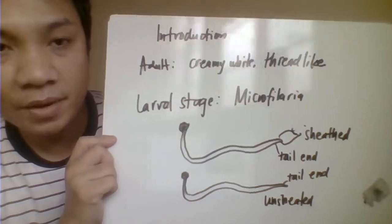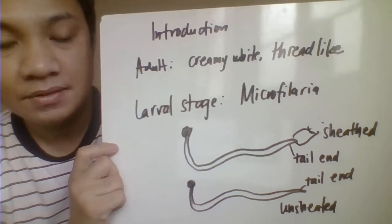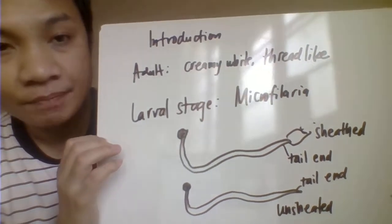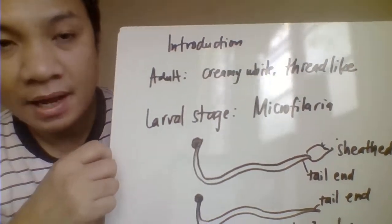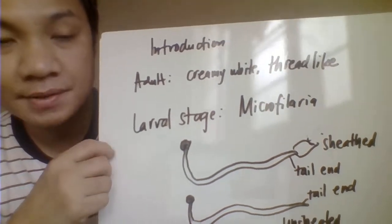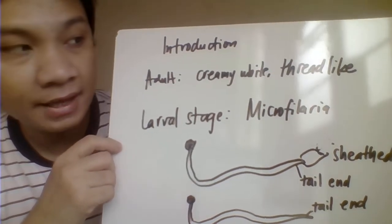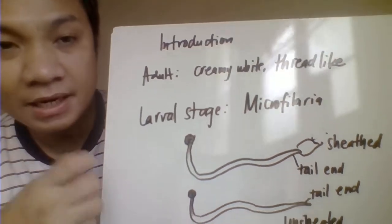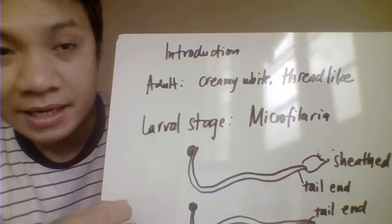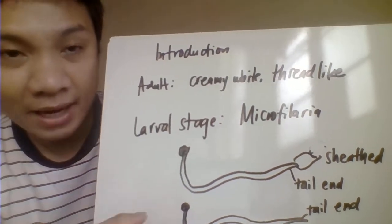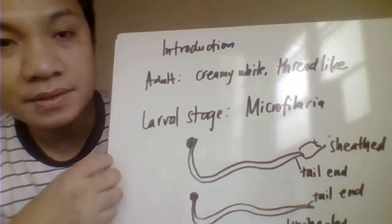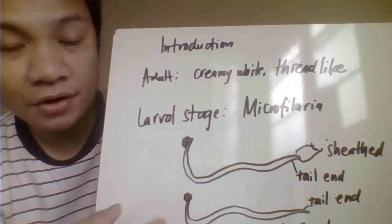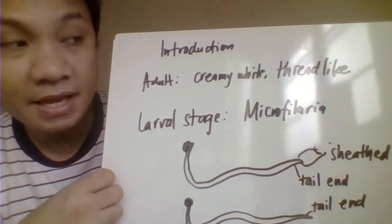For the general characteristics, we have the stages. Filarial worms are divided into the adult stage. The adult stage is almost the same across all species of filarial worms — they are thread-like, very fine and thin in body, but still cylindrical or round, making them nematodes. They are creamy white, and all species share these same characteristics.